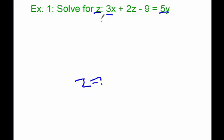To solve this, we're going to follow the order of operations backwards, like we would with any other multi-step equation. We should start by checking to see if there's any distributive property to apply — we look through and see there is not. Our next step is to combine like terms on either side: 3x plus 2z minus 9 equals 5y has no like terms, and 5y is by itself. Our next step would be to get all of the z's onto one side — they already are, so we don't have to do any work for that.